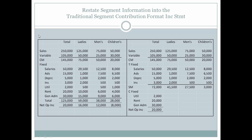What do I mean by that? When we have a segment, a traditional segmented income statement using the contribution format, we will take all the sales and the variable expenses associated with each segment, we will look at the contribution margin, and from that we will deduct all traceable fixed expenses. So for the children's department, which appears in a traditional contribution format income statement to be losing money, if we restate it into a traditional segment contribution format income statement, we can look at only those traceable fixed expenses associated with the children's department.